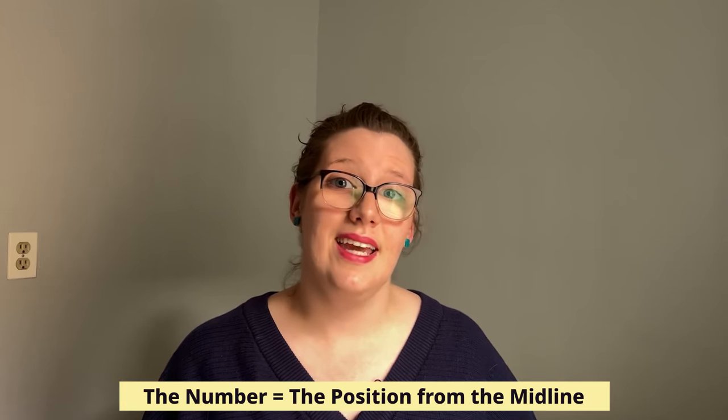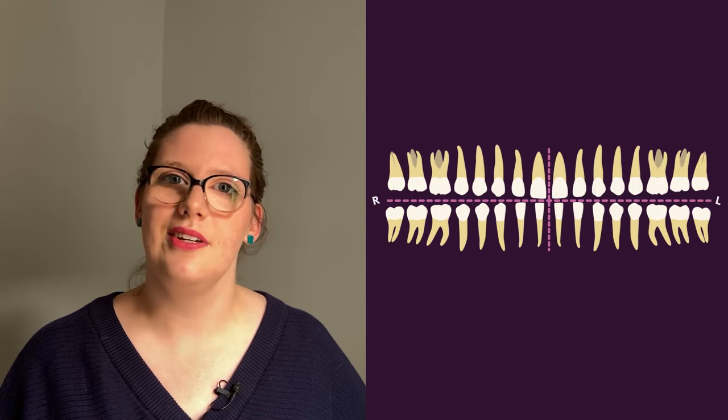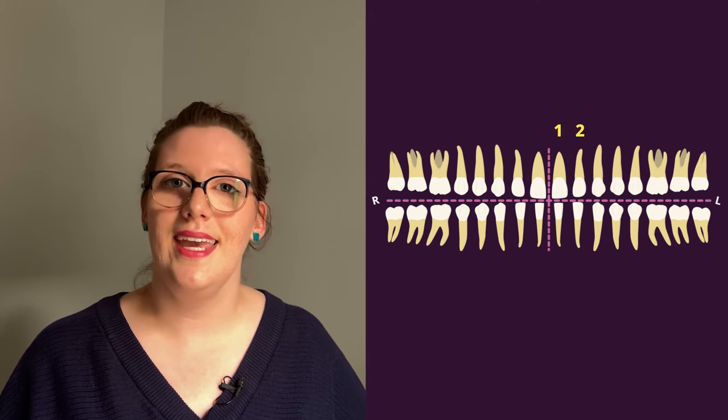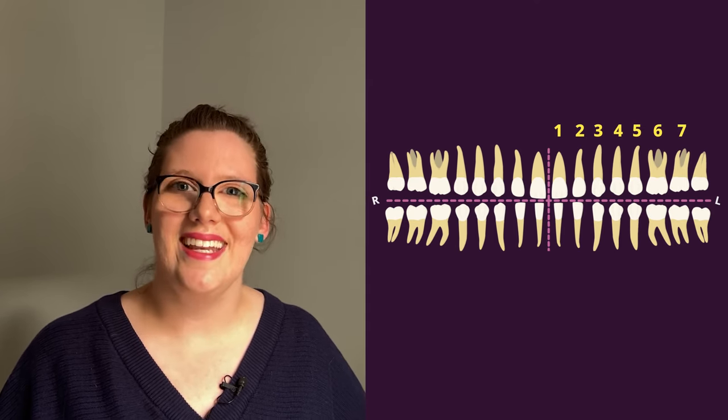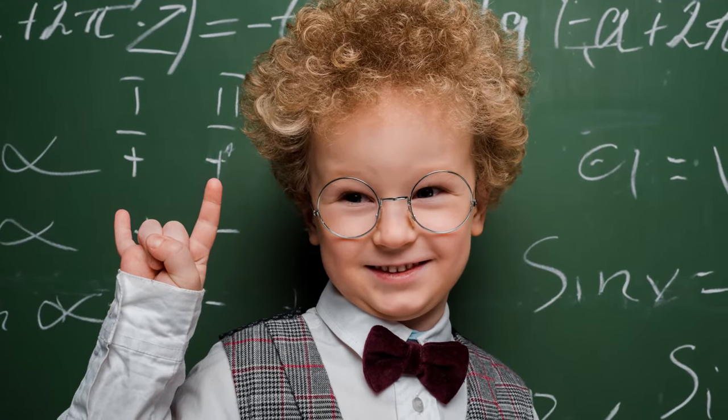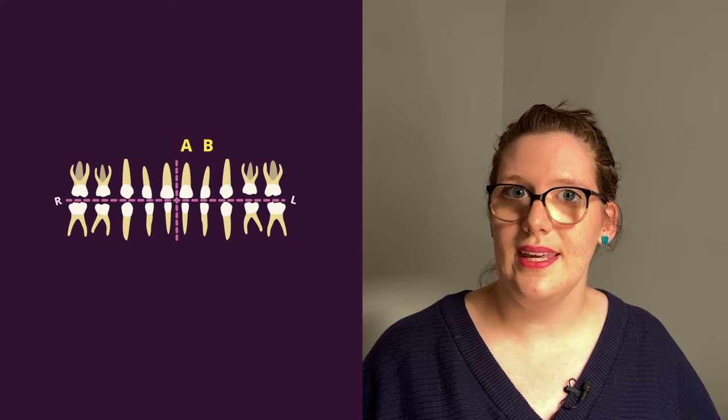The tooth is then assigned a number indicating its position from the midline. For permanent teeth, the teeth are assigned a number one through eight: central incisor one, lateral incisor two, canine three, first premolar four, second premolar five, first molar six, second molar seven, and third molar eight. For the primary dentition, the teeth are assigned a letter A through E indicating the position from the midline: central incisor A, lateral incisor B, canine C, first molar D, and second molar E. That's how the Palmer Notation System differentiates between primary and permanent teeth.